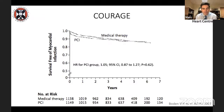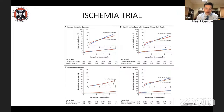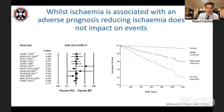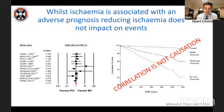However, the surprise came when the COURAGE trial was published, showing that relieving ischemia with PCI — an extremely effective way of relieving ischemia — didn't have any impact on the incidence of myocardial infarction. This has been further supported by the ISCHEMIA trial, where relief of ischemia with a higher ischemic burden than COURAGE still had no impact on rates of myocardial infarction at three years.